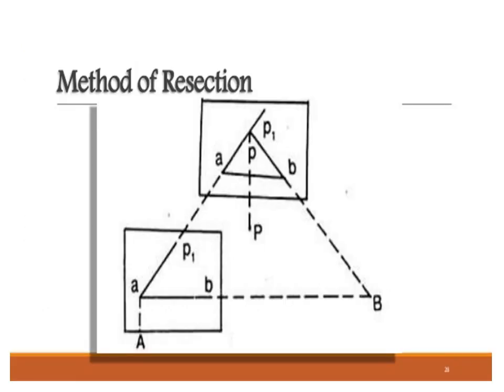This slide refers to the method of resection, where the station A and P are shown with small a representing ground point capital A, and small p representing capital point P on the ground. B is the position where another ranging rod is held, and P1 is the position of capital P on the paper.